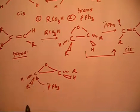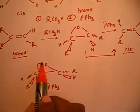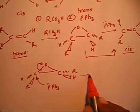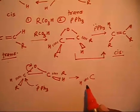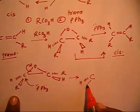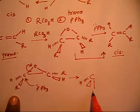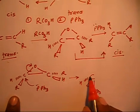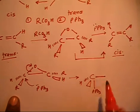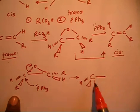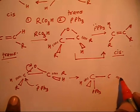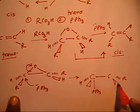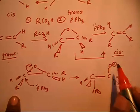If PPh3 attacks on one carbon, that carbon cannot have five bonds simultaneously, so the epoxide ring must open. You get a carbon bearing H, with R and PPh3 attached. The other carbon now has H and R groups, with an O minus (alkoxide) formed upon ring opening.